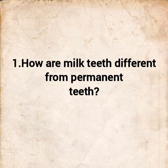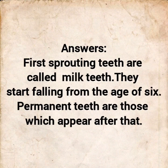Question number 1: How are milk teeth different from permanent teeth? Answer: First sprouting teeth are called milk teeth. They start falling from the age of 6. Permanent teeth are those which appear after that.